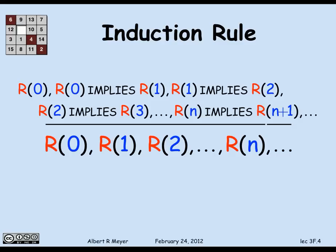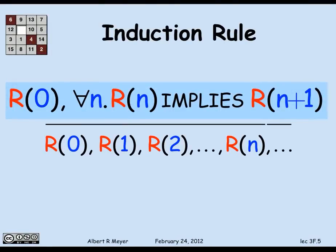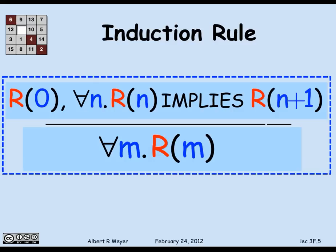There is a much more concise way to express both the antecedents and the conclusion using quantifiers. The antecedents can simply be stated by two predicate formulas: r of 0, and for all n, r of n implies r of n plus 1. That's a summary of the rule that if n is red, then n plus 1 is red. Similarly, the conclusion that r of 0, r of 1, and so on hold is simply expressed as: for all m, r of m holds. This is the form of the induction rule.